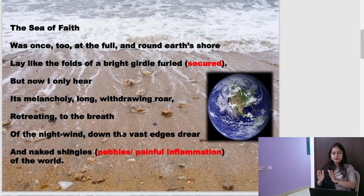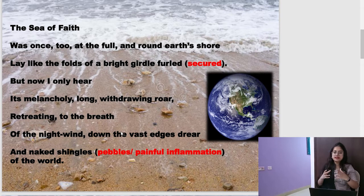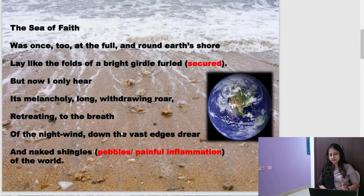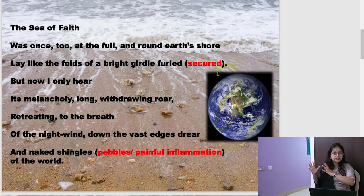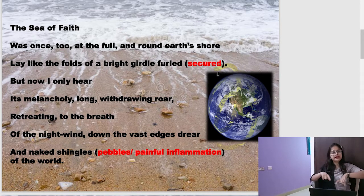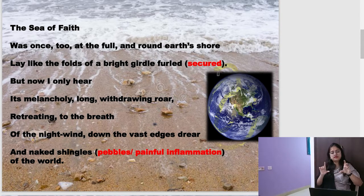The poet is comparing his own situation — once upon a time he also believed in God a lot. But now he has also started doubting the presence and activity of God. He thinks that just like this picture of earth, where you see so many water bodies when you look from a distance — it seems like a bright girdle, like a belt that wraps around earth — there was a time when faith used to cover all men. Everybody was bound tight by faith.